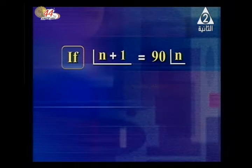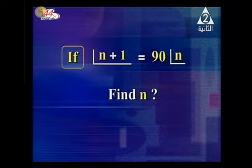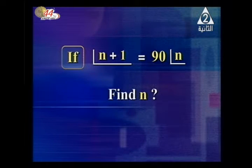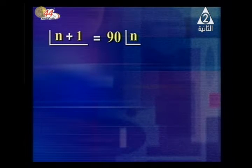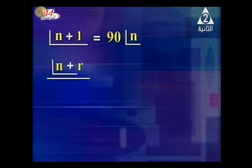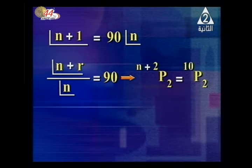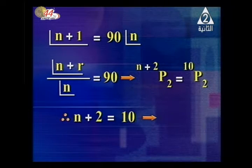Another example: if (n+1)! = 90 × n!, find the value of n. Dividing both sides by n! and using (n+1)! = (n+1) × n!, we get n+1 = 90. Wait — simplifying further: (n+2)P2 = 10P2, therefore n+2 = 10, so n = 8.